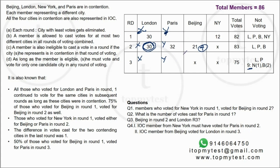Paris gets 3 additional votes from New York voters in round two. Beijing's 21 votes in round two include 9 votes from former New York voters. So 12 votes came from other sources — these are Beijing's original supporters from round one. We also need to figure out where the New York delegate voted.